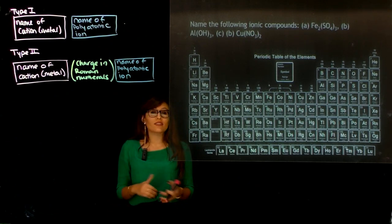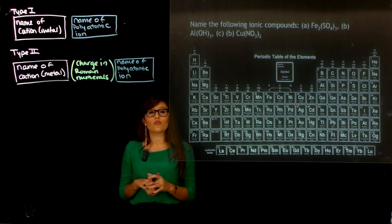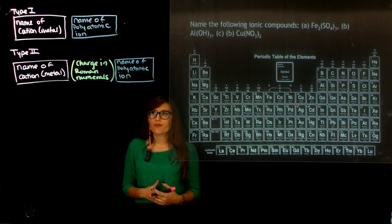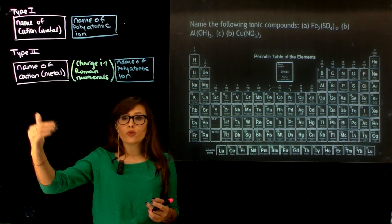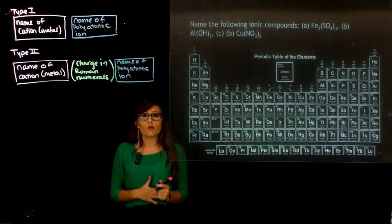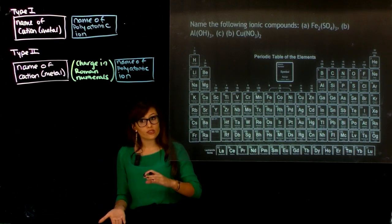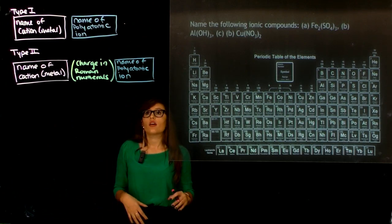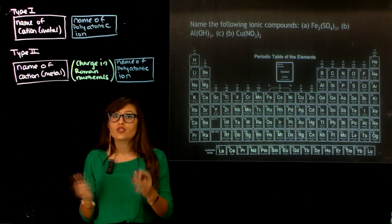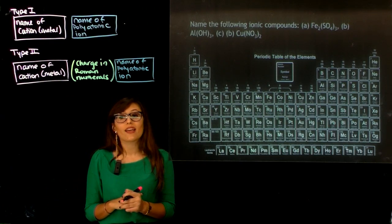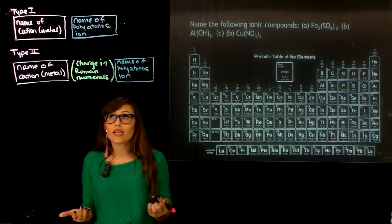When naming polyatomic anions that are incorporated into an ionic compound, we're going to name them slightly differently. We still have Type 1 and Type 2. The distinction is whether the first element is a main group or a transition element. The base name is just going to be the name of your polyatomic anion. That's how you name these.